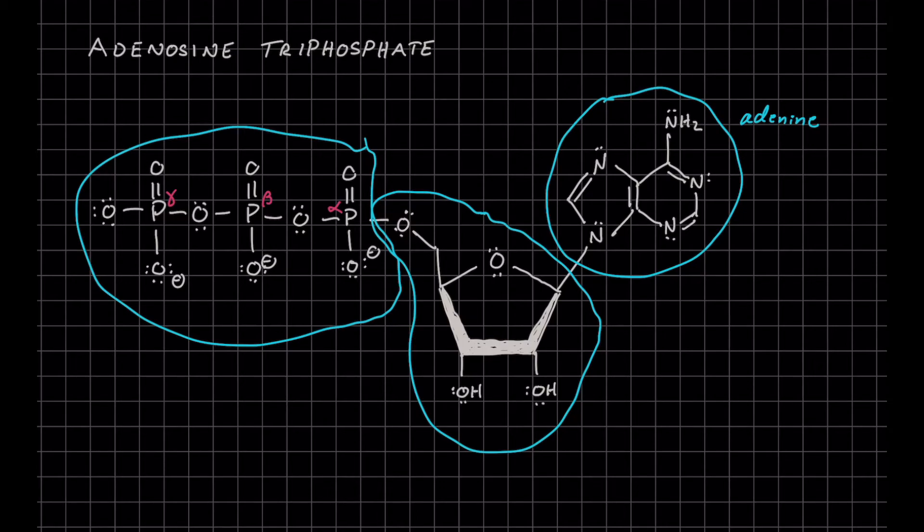And when we hydrolyze ATP to ADP, we're going to lose this gamma phosphate. And when we hydrolyze ATP to AMP, or adenosine monophosphate, we'll lose both the beta and gamma phosphate units here.